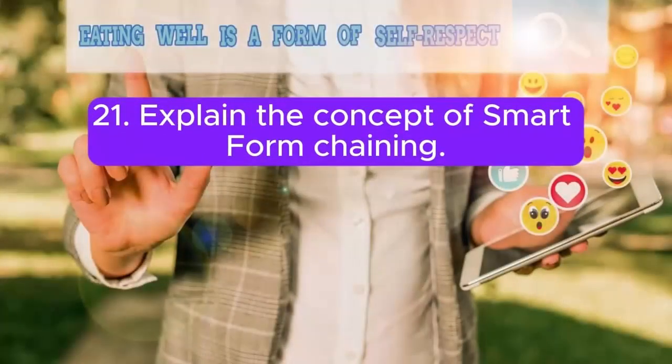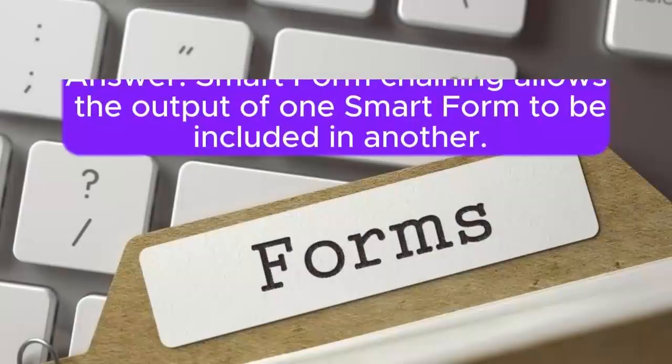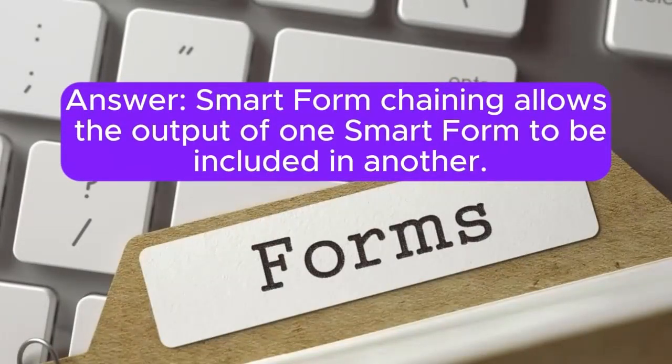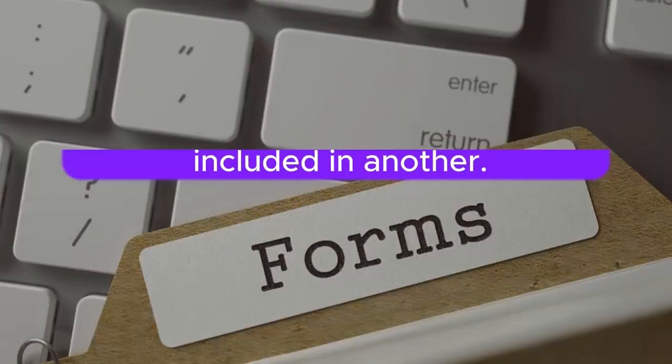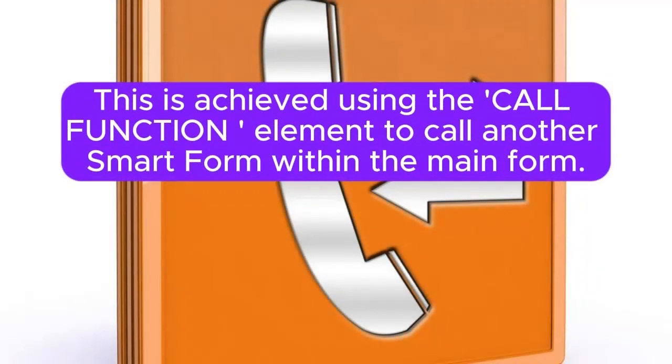21. Explain the concept of SmartForm chaining. Answer: SmartForm chaining allows the output of one SmartForm to be included in another. This is achieved using the call function element to call another SmartForm within the main form.